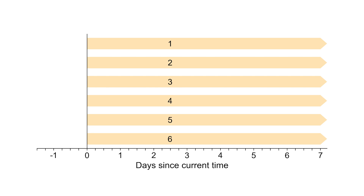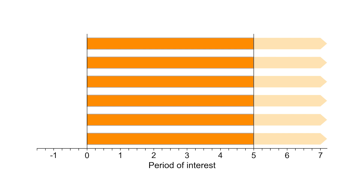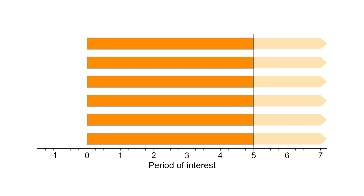For example, the input data for Ensemble member four is the 18-hour and later QPF from the GFS initialized 18 hours before the water model issuance time. The proportion of the six ensemble members that forecast rapid-onset flooding during the period of interest gives us the probability.